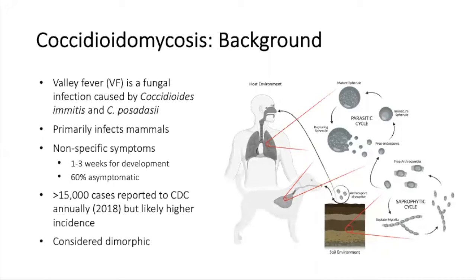Valley fever, or coccidioidomycosis, is a fungal infection that primarily infects mammalian hosts. In the soil, it exists as mycelia, which contain arthroconidia that can become easily dislodged and aerosolized and then inhaled. In the host, the fungus transforms into its parasitic form, known as spherules, and causes disease.